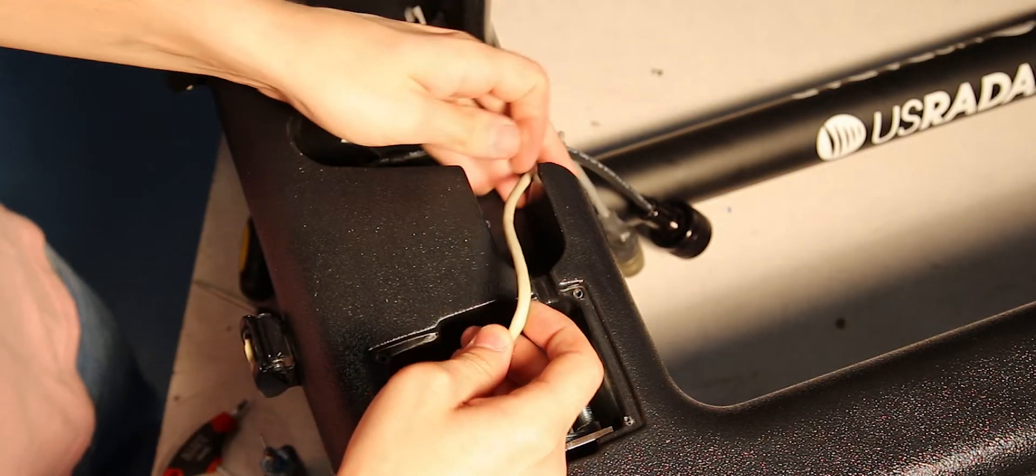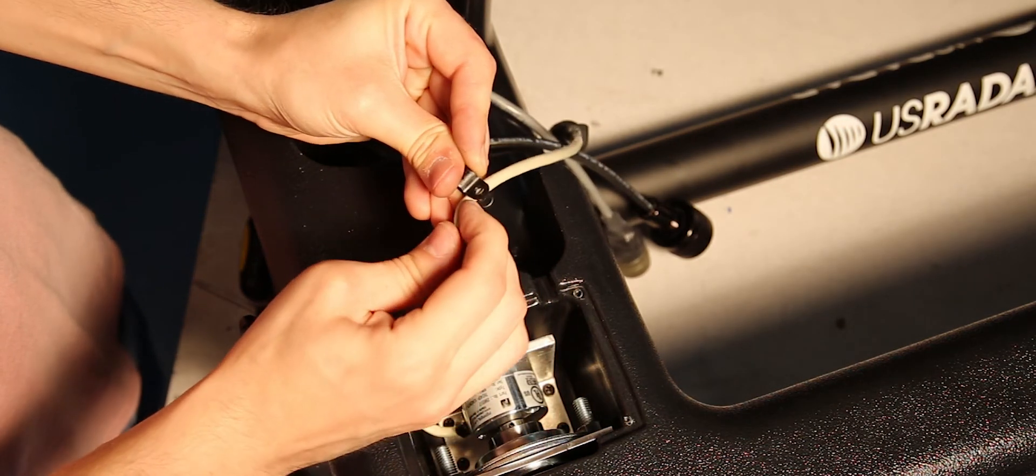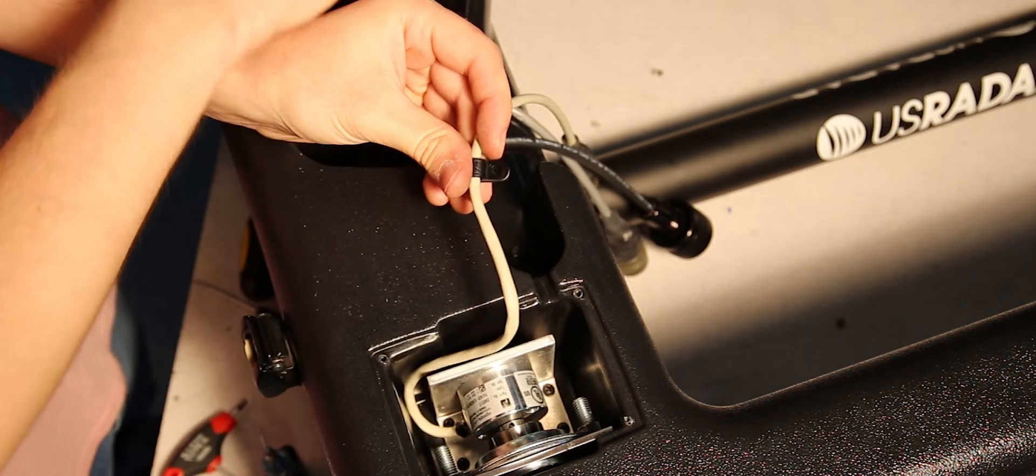Place the P-clip onto the encoder cable and screw it into the small cavity directly adjacent to the encoder cavity.